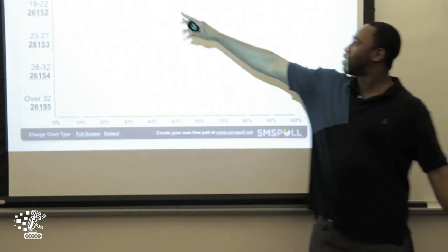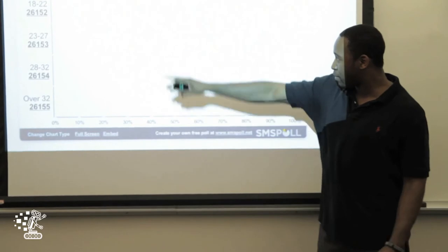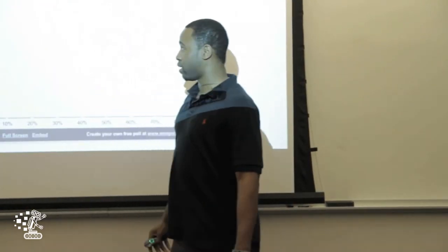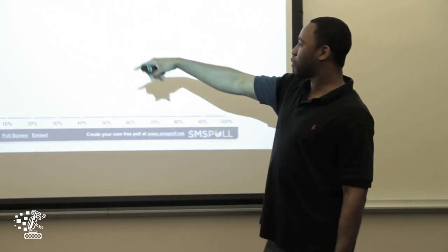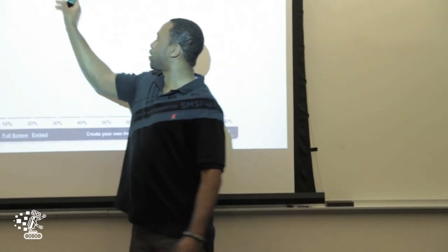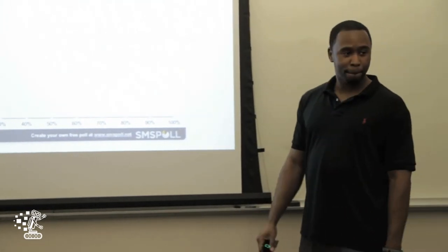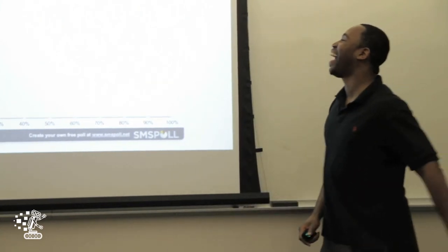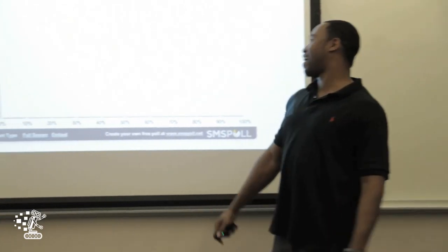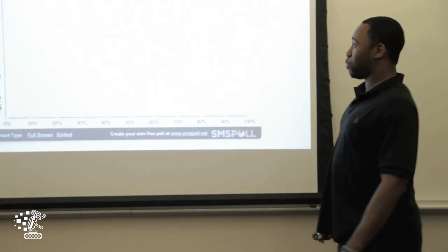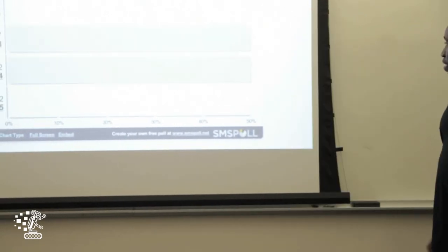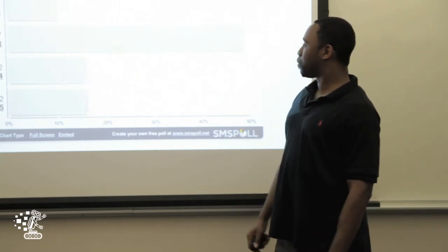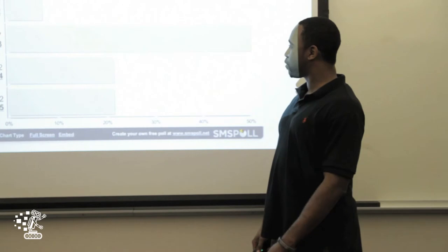Take your phone out, text this number, and answer the question: what age are you? If you're between 18 and 22 — which I'm guessing some of you are — text your answer to this number. All right, so most of the people here are between 23 and 27.